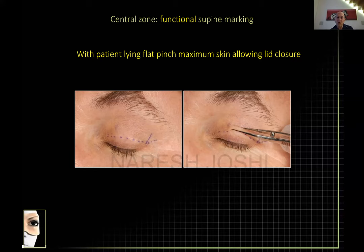With the patient lying flat, make another pinch and look for lash turn — when you pinch, just see the lash turning up. I would do a pinch lying down; if the patient is awake you can again ask them to close the brows tightly and relax, then do your pinch, and that will give you a safe amount to resect.